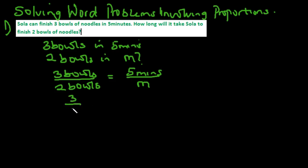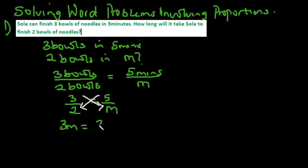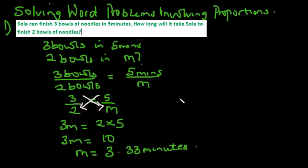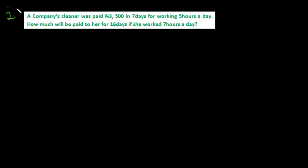We write three over two equals five over m. Just like solving for missing values in a proportion, we cross multiply. So we have three times m equals two multiplied by five, which means 3m equals ten. Therefore m equals 3.33 minutes. So Charlotte can finish three bowls in five minutes, which means she will finish two bowls in 3.33 minutes.